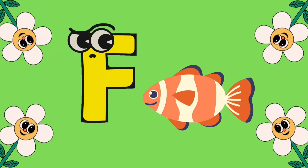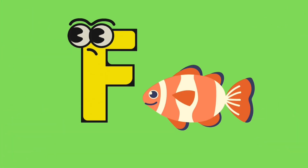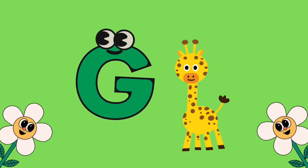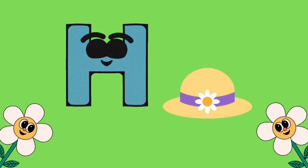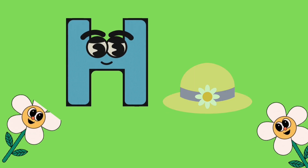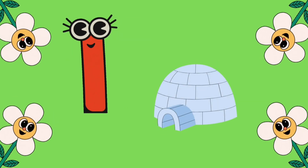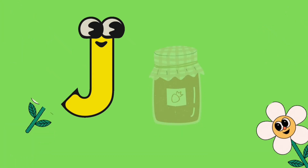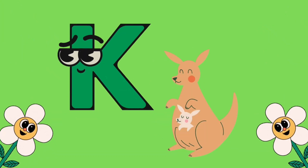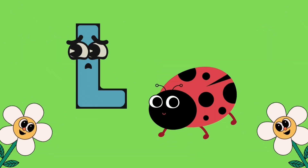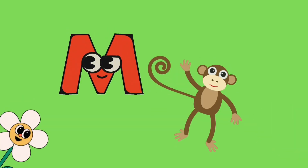F is for fish, G is for giraffe, H is for hat, I is for igloo, J is for jam.